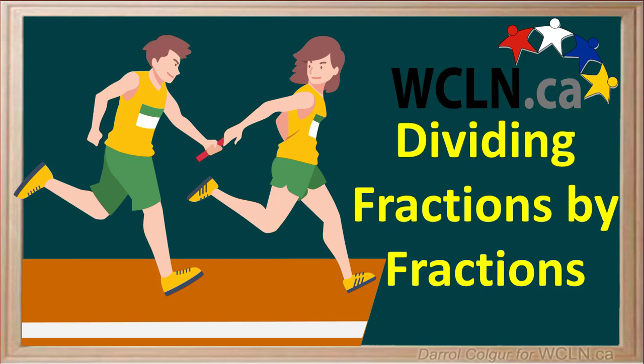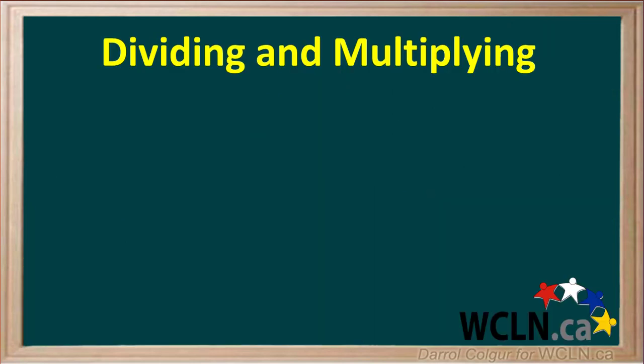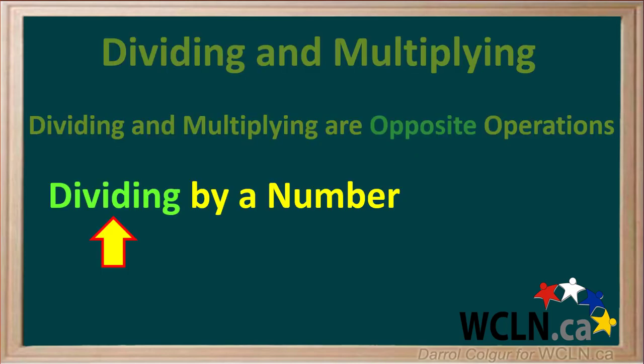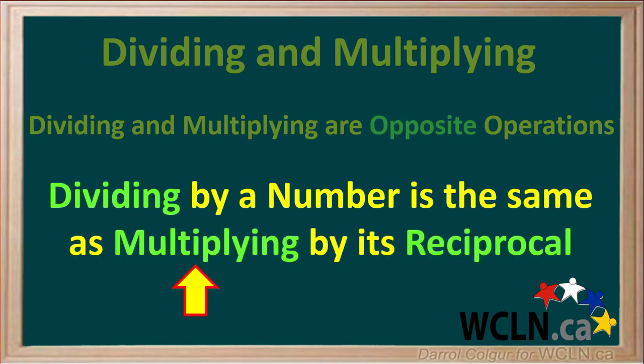Sometimes we need to divide a whole number by a fraction, or one fraction by another fraction. We'll start by talking about dividing and multiplying. Dividing and multiplying are opposite operations. This means that dividing by a number is the same as multiplying by its reciprocal. Let's see how this works.